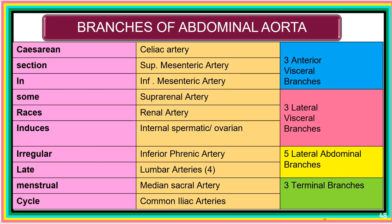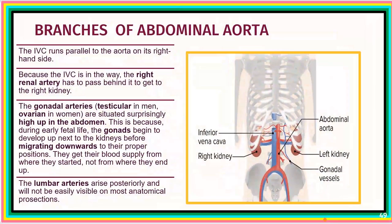To help recall the various branches of the abdominal aorta, we have this mnemonic: 'Caesarean section in some races induces irregular late menstrual cycle.' We will now take some more information on the branches of the abdominal aorta.